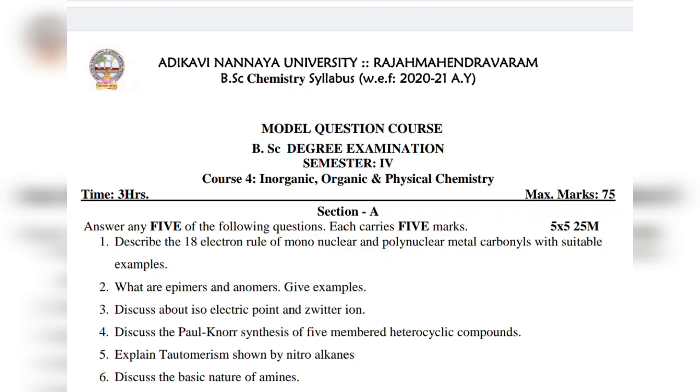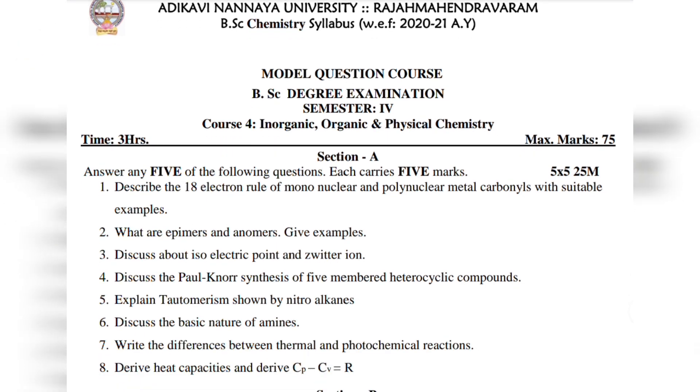First, let's look at the shorts. Question 1: Describe the 18 electron rule of mononuclear and polynuclear metal carbonyls with suitable examples. Question 2: What are epimers and anomers? Give examples. Question 3: Discuss about isoelectric point and zwitterion. Question 4: Discuss the Pauli-Knorr synthesis of five membered heterocyclic compounds. Question 5: Explain tautomerism shown by nitroalkynes. Question 6: Discuss the basic nature of amines. Question 7: Write the differences between thermal and photochemical reactions. Question 8: Derive heat capacities and derive Cp minus Cv equals R.